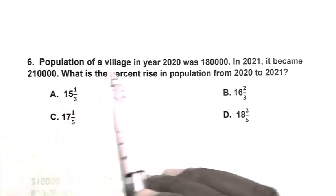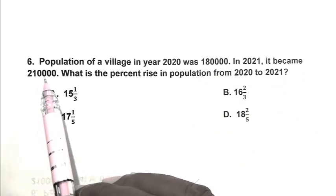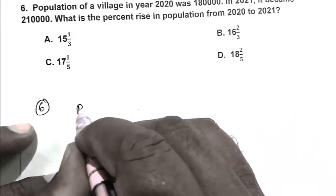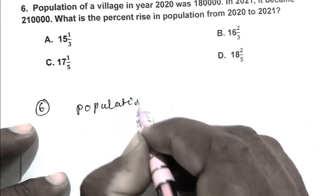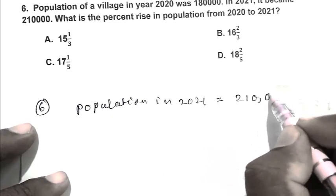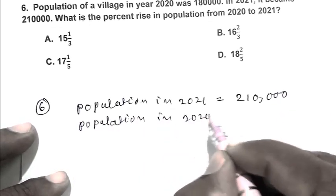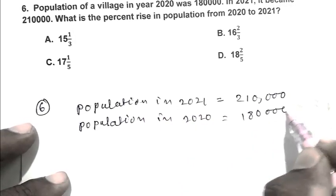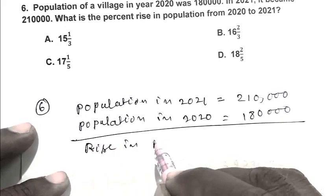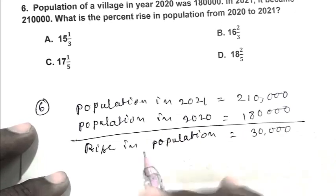Question number 6. Population of a village in year 2020 was 1,80,000. In 2021, it's become 2,10,000. What is the percentage rise in population from 2020 to 2021? Population in 2021, 2,10,000. Population in 2020, 1,80,000. So friend, rise in population, 30,000.